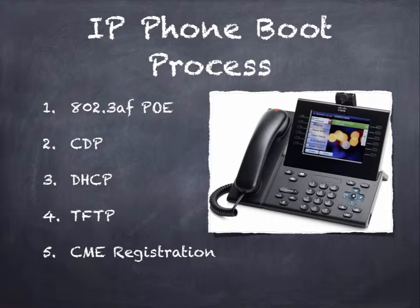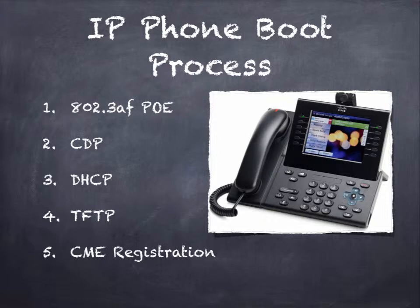The phone will then use that information, knowing what VLAN it's supposed to be on, to send a broadcast DHCP request to learn its IP settings. Within the DHCP reply will come back option 150, in addition to the usual IP address, mask, and gateway. Option 150 is the IP address of the TFTP server where the phone can find its configuration file. The phone will now use that IP to reach out to the TFTP server, and it will provide the server its MAC address as the file name it is requesting.